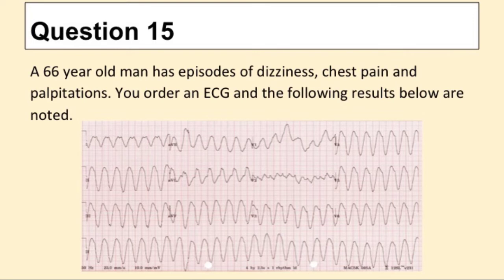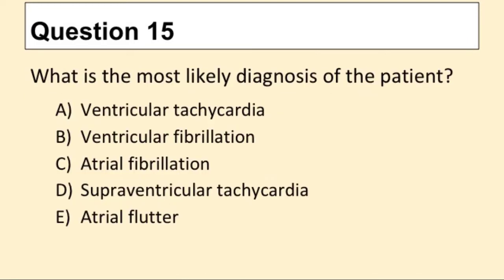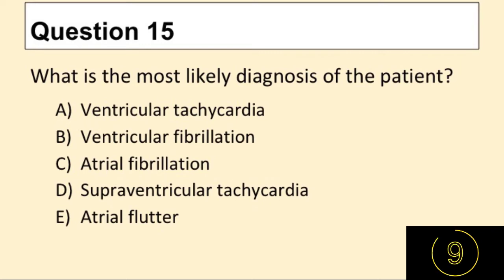Question 15. A 66-year-old man has episodes of dizziness, chest pain, and palpitations. You order an ECG and the following results are noted. Pause the video to look at the results. What is the most likely diagnosis of the patient?